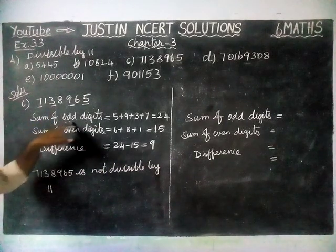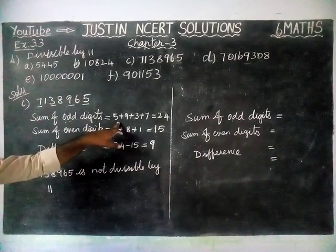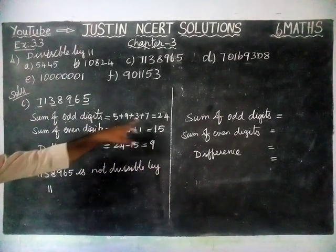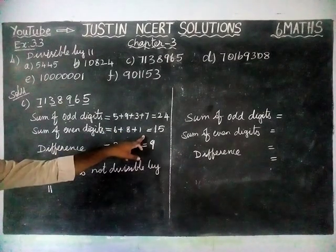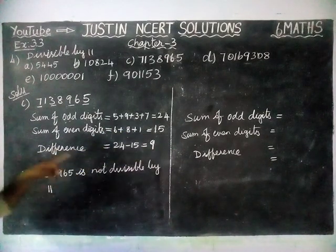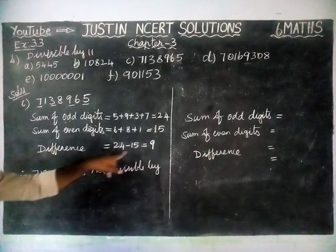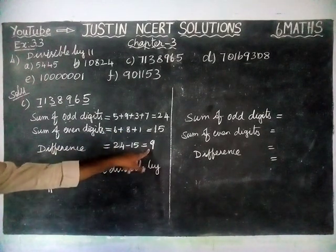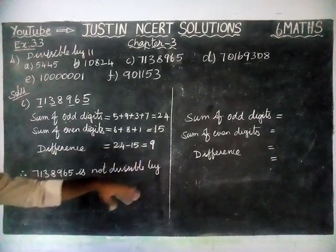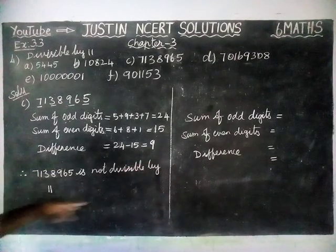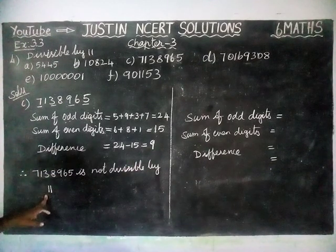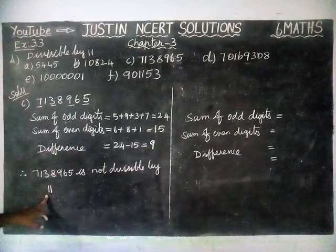Therefore, the sum of odd digits is equal to 24, the sum of even digits is equal to 15, and the difference is 9. Since 9 is not divisible by 11, the given number is not divisible by 11.